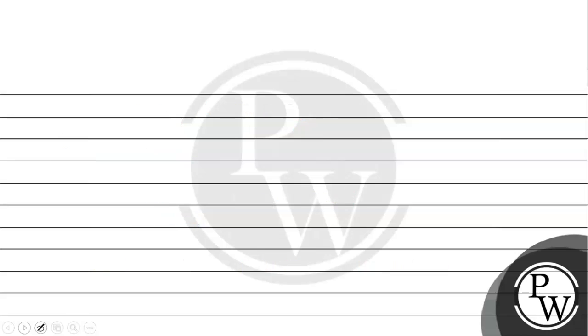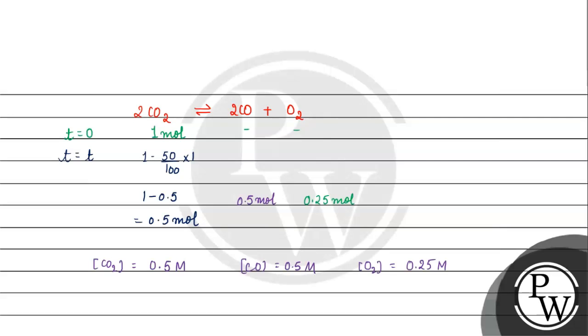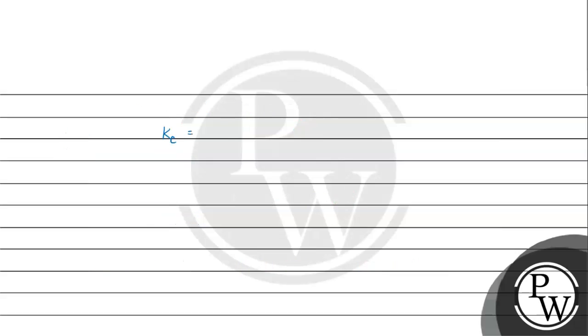Now if I write Kc for this reaction, Kc will be equal to the product side species carbon monoxide and oxygen raised to the power of their stoichiometric coefficients. So concentration of carbon monoxide to the power 2, times oxygen concentration to the power 1, divided by reactants concentration raised to the power of its stoichiometric coefficient.